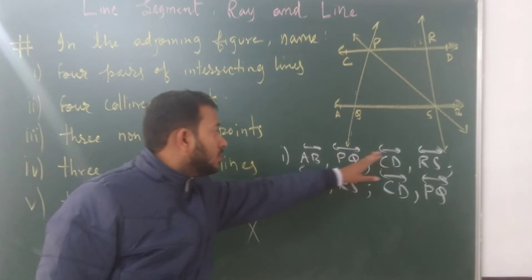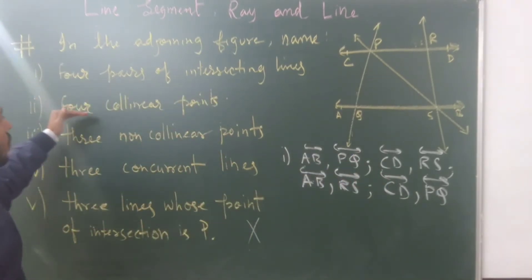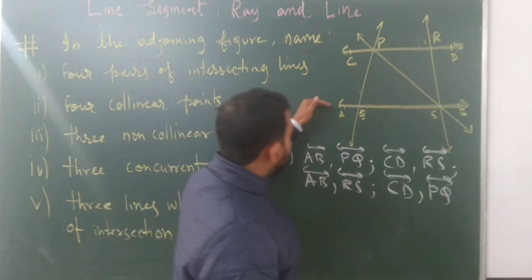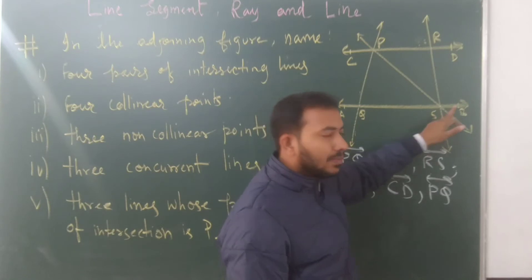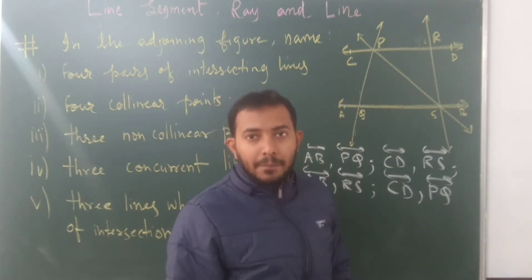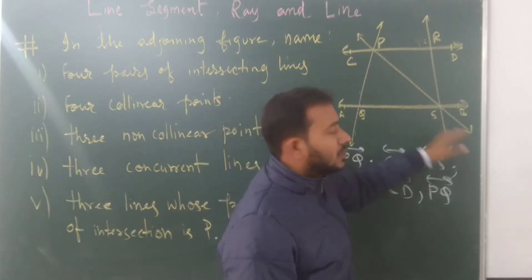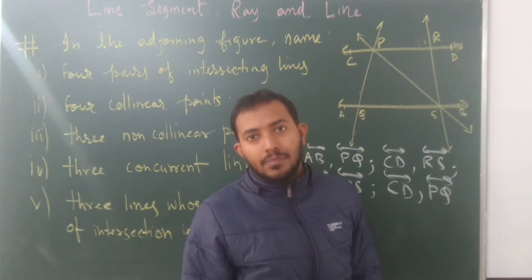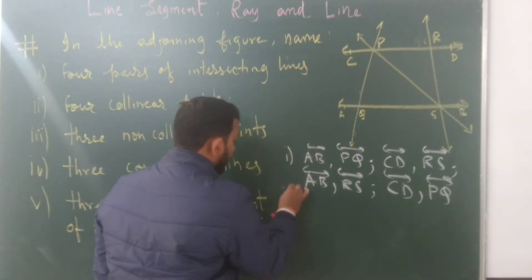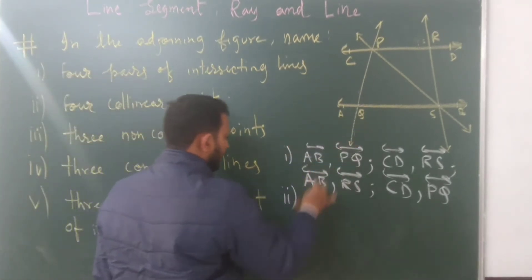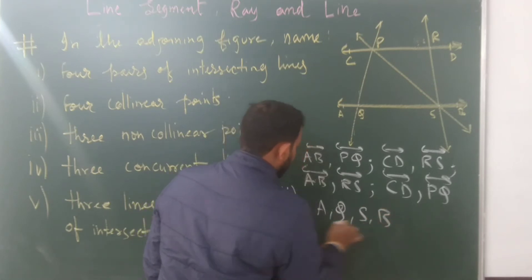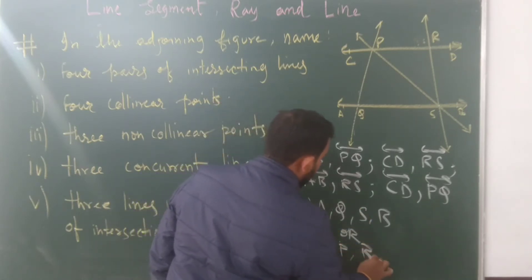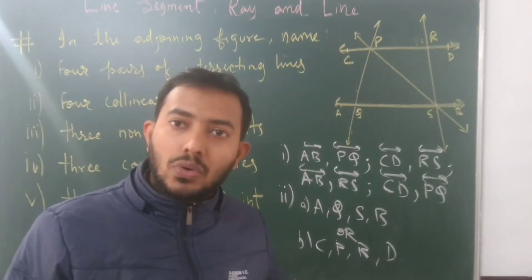The next question is four collinear points. Collinear points means points which lie on the same line on the plane. So on one line you can see points A, Q, S, B — these are four collinear points. Your answer may also be C, P, R, B because they also lie on the same line. So any one set — either A, Q, S, B or C, P, R, B — you need to write for four collinear points.